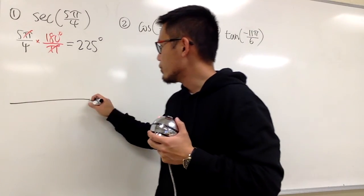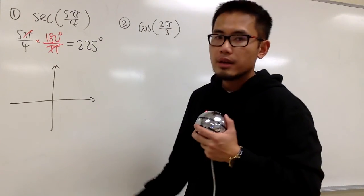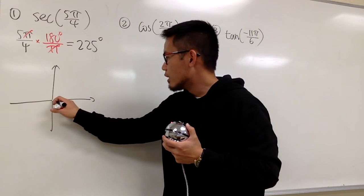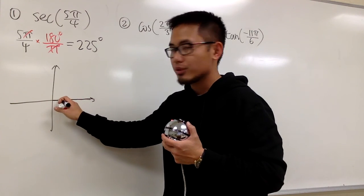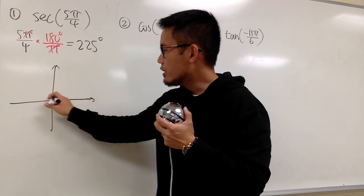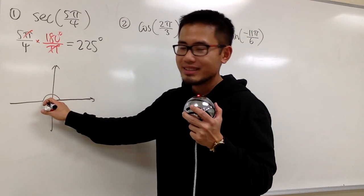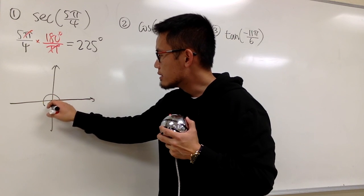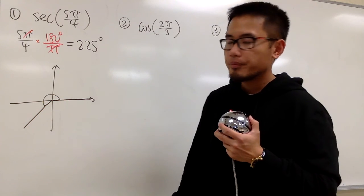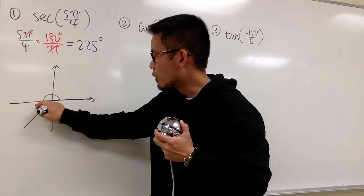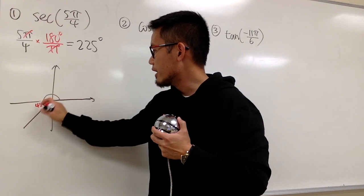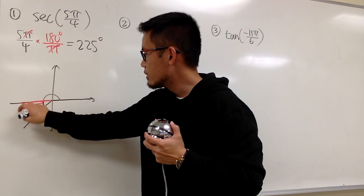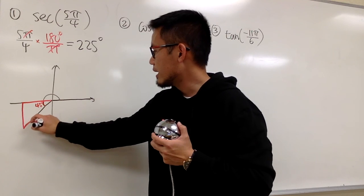From here, let's draw the x and y axis. We turn and make sure we have 225 degrees. Starting from the positive x-axis, we're going to turn. From here to here is 180 already. We need 45 degrees more. So this is the terminal side of that reference triangle, and this right here is our reference angle, which is 45 degrees. Now I can go ahead and make a right triangle — always use the x-axis and draw a line straight down. Here is my reference triangle.